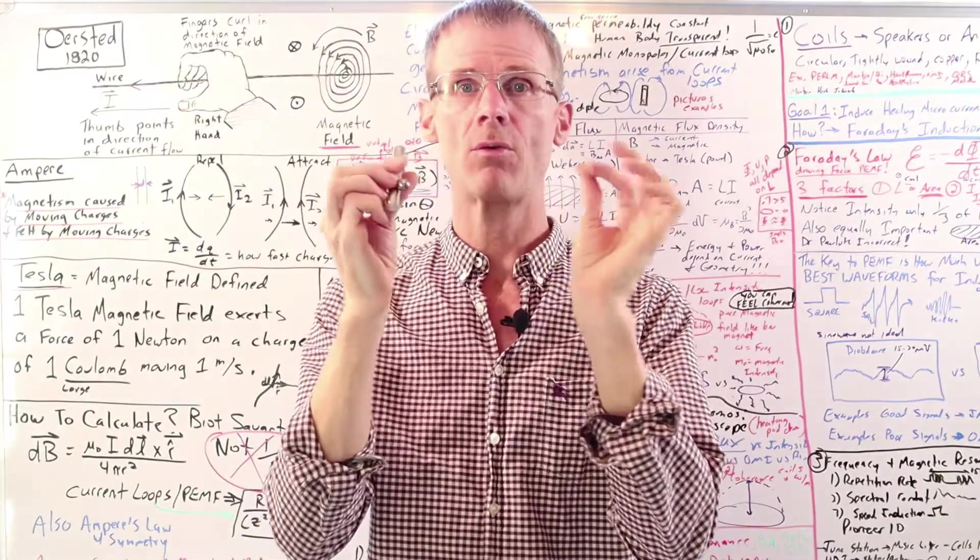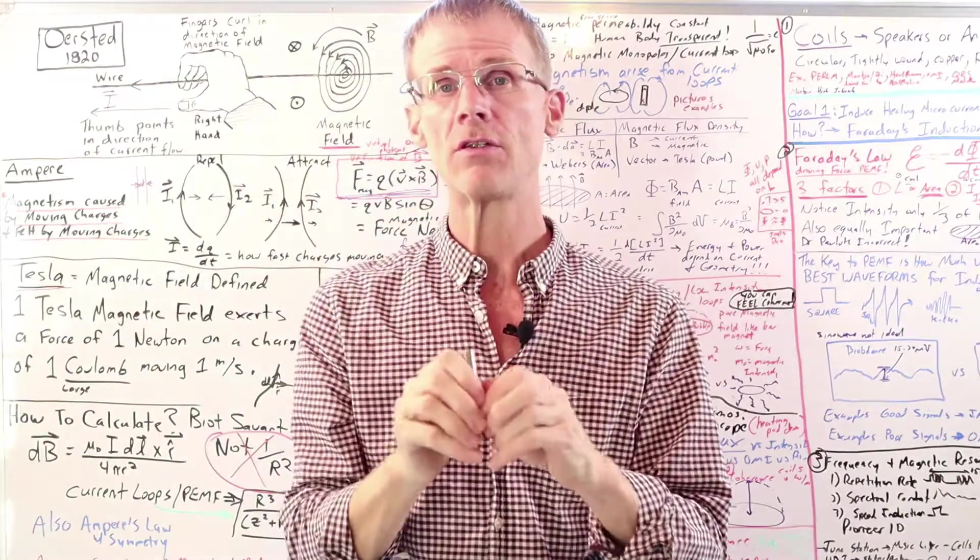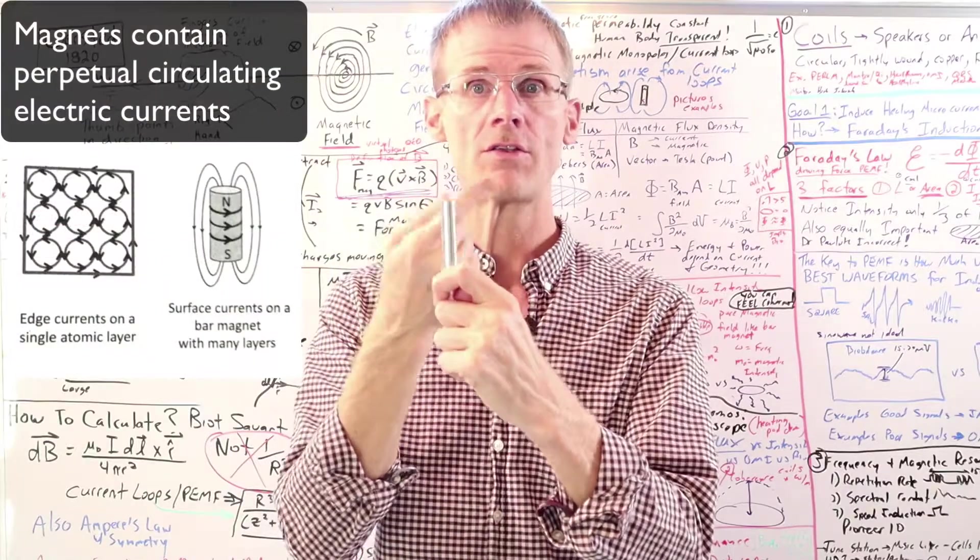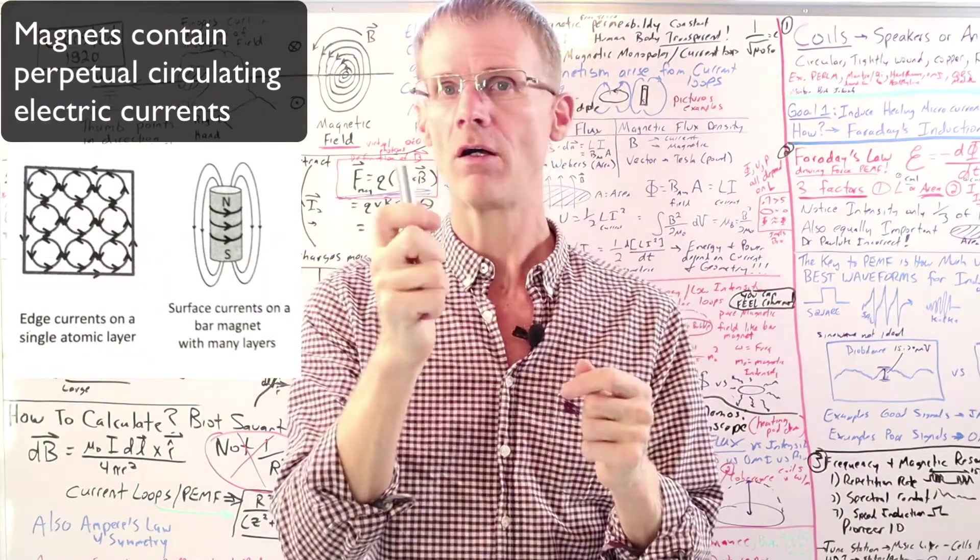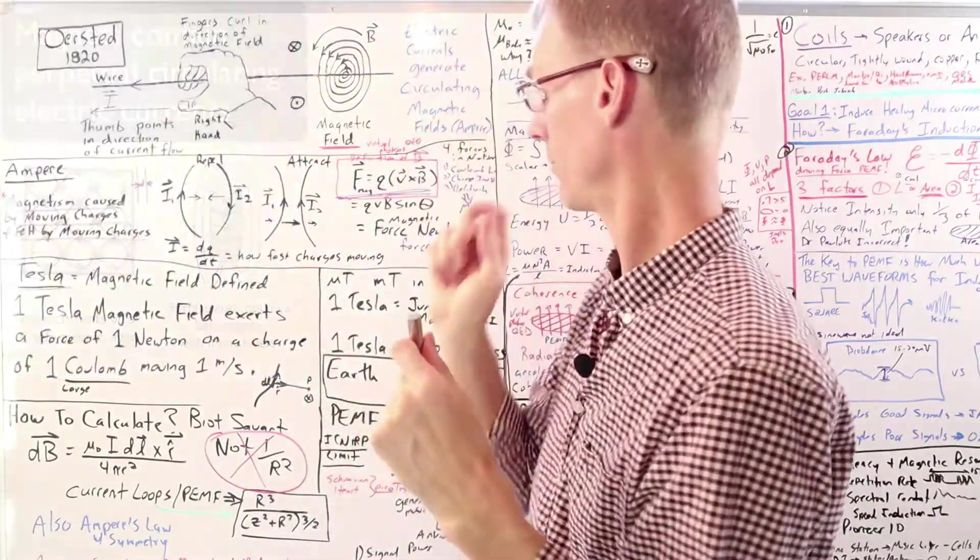Now, one thing I want to point out here is I have a really strong 12,000 gauss neodymium magnet. And it turns out what Ampere found is that permanently magnetized objects have basically currents that are perpetually moving. So also static magnets come from moving charges. In fact, we'll see next from circulating charges.